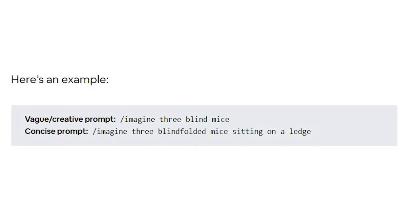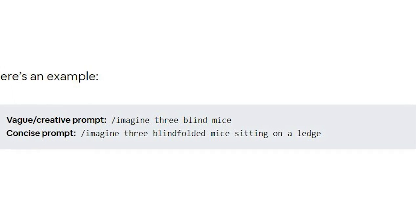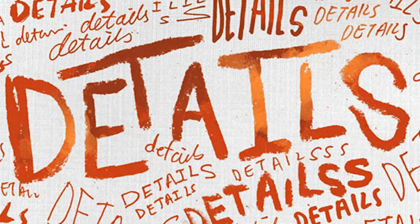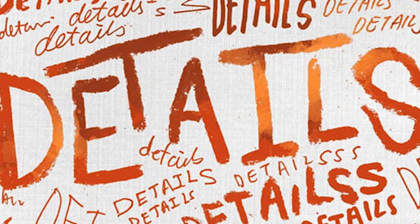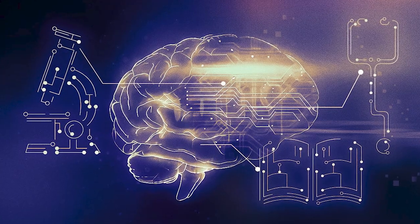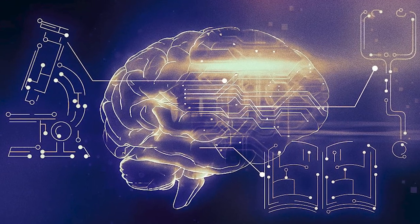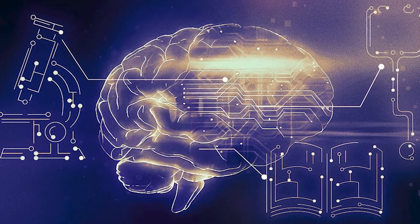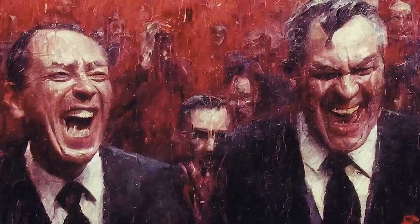In other words, if you wanted to create something very specific, then you should be specific in your prompt. That being said, you should also avoid adding too many minute details to your prompts. If you try to describe an entire scene down to the very last detail, it will most likely overwhelm the AI. Your images will usually become worse, not better.